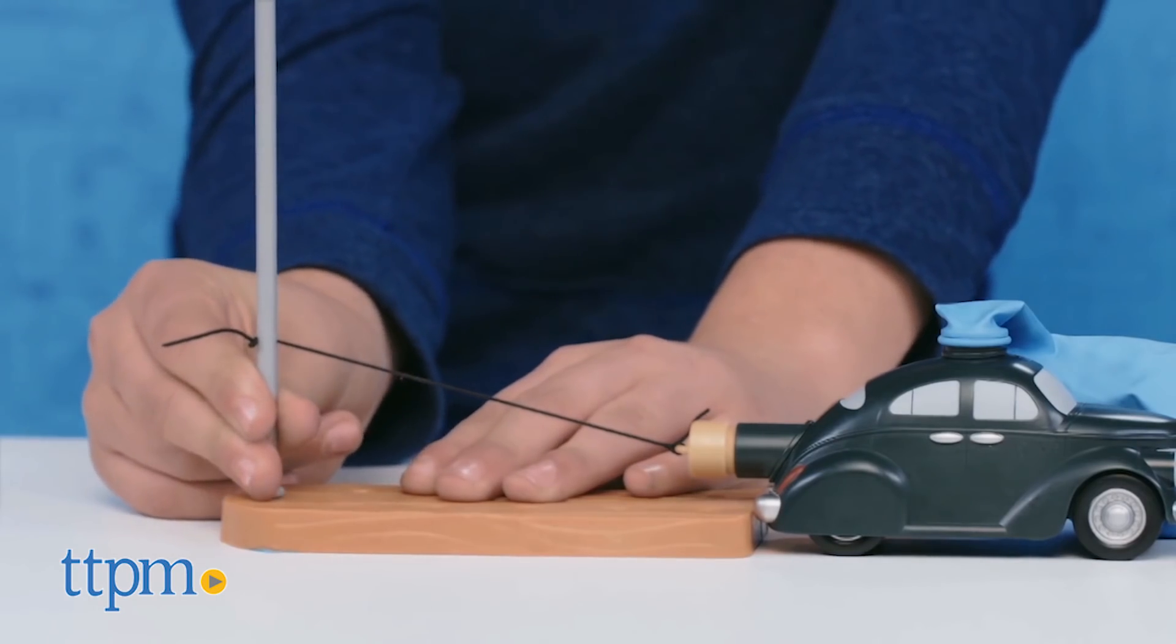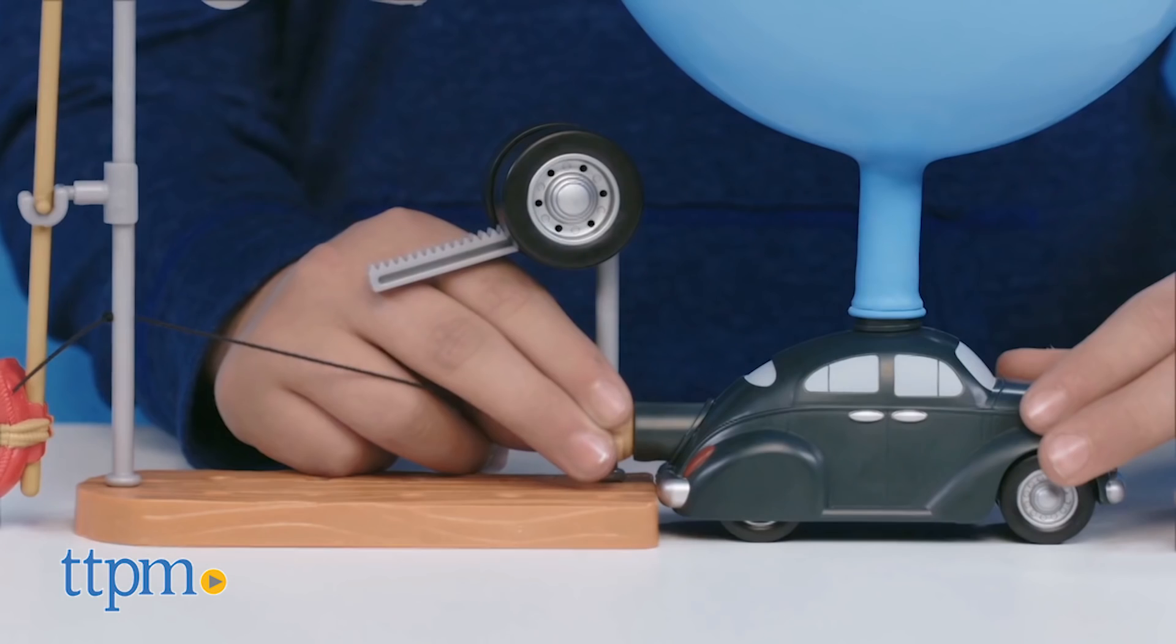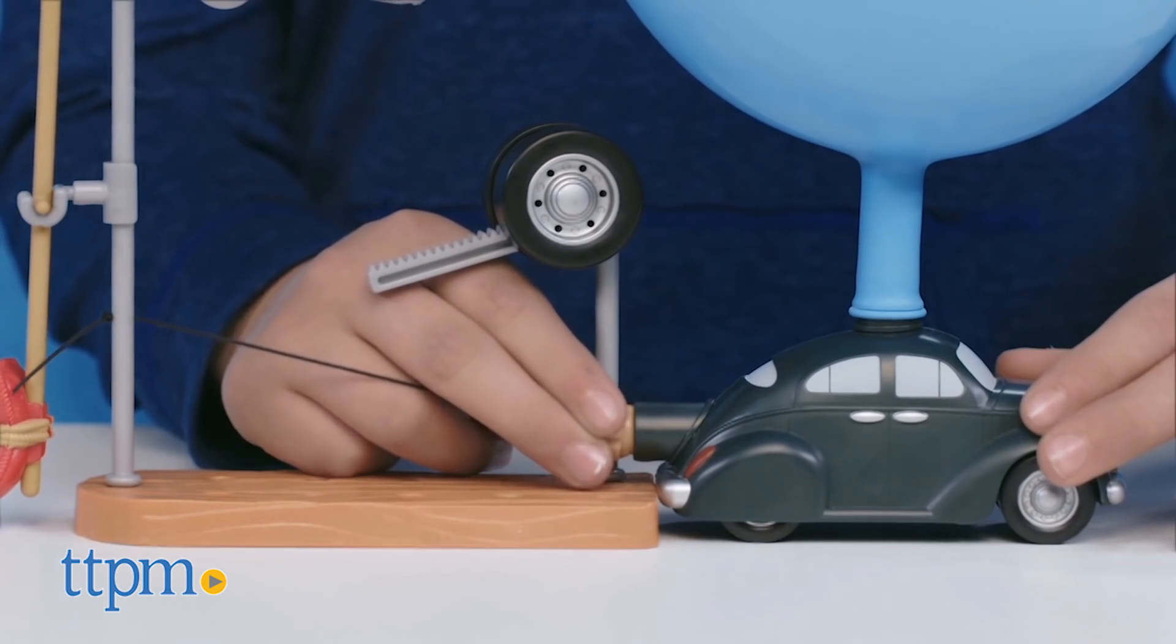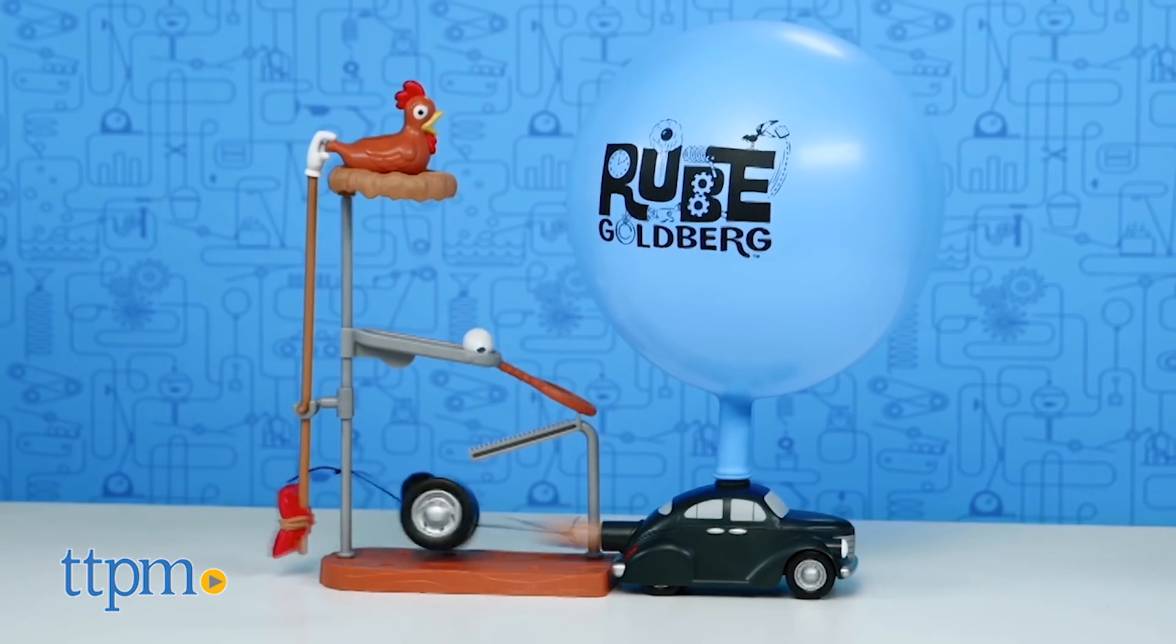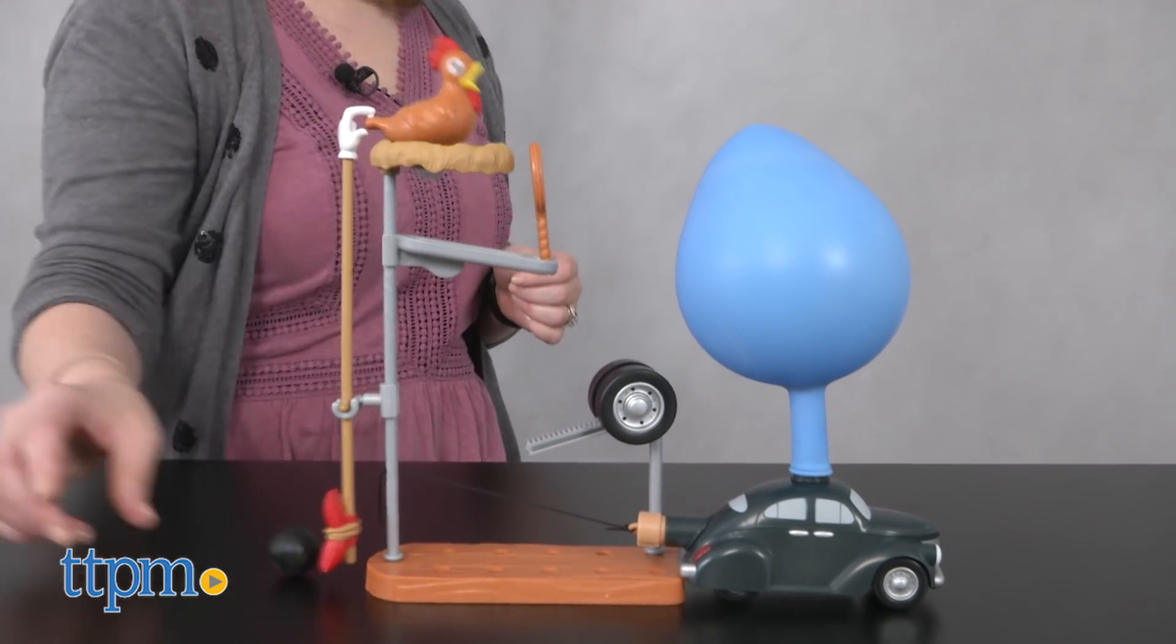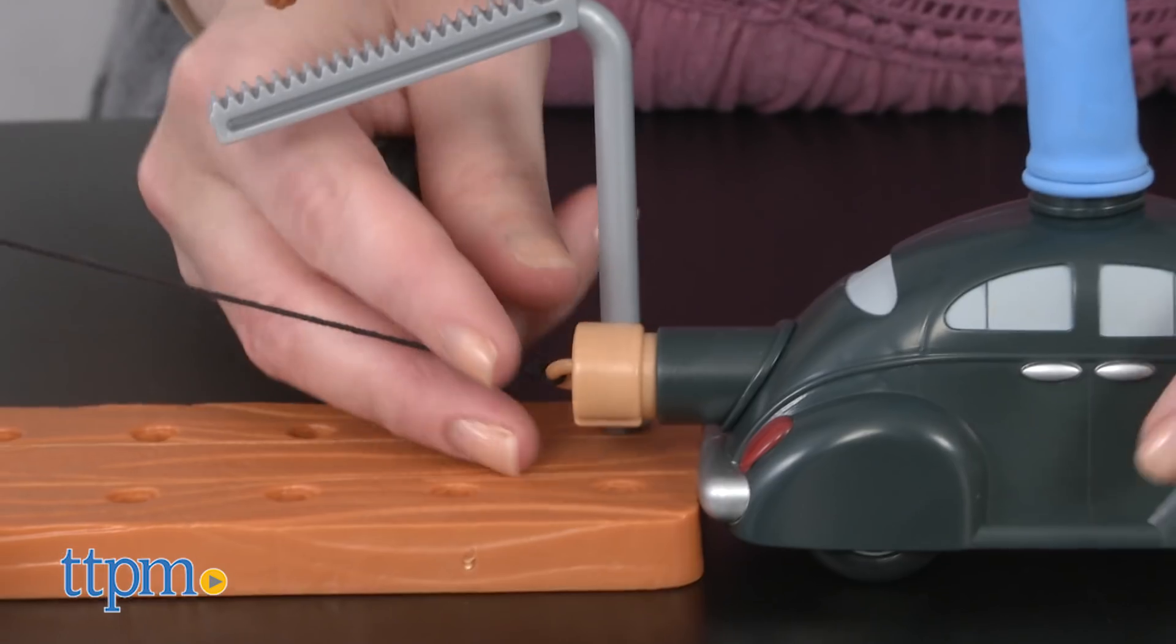Rube Goldberg machines are a lot of fun to watch in action, especially when they work, and with this toy it's up to kids to build the machine and figure out how to make it work. As long as kids know that going into the play, they'll have fun tinkering and experimenting to get this machine to work.